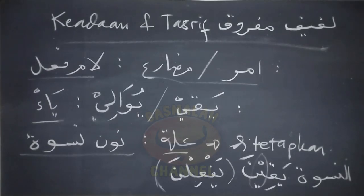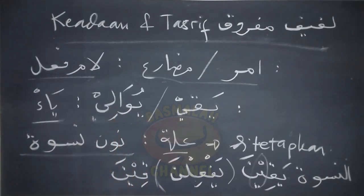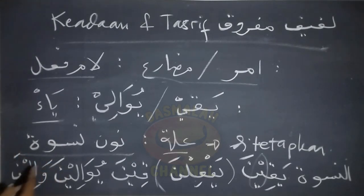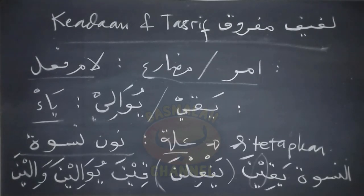Selanjutnya ketika berbentuk fi'il amar maka akan menjadi kiina, atau lafad yuwali maka akan menjadi yuwalina, dan ketika berbentuk fi'il amar maka akan menjadi walina. Jadi yaknya di sini tidak dibuang dan juga tidak dirubah bentuknya menjadi yang lain. Ini adalah ketentuan dan tasrif dari fi'il yang masuk di dalam kategori lafif mafruk, baik ketika berbentuk fi'il madi, fi'il mudhari', maupun fi'il amar. Di mana ketentuan daripada lafif mafruk ini sama dengan ketentuan dari fi'il bina' mithal dan fi'il bina' naqis. Silakan dipelajari dengan seksama dan sampai jumpa pada pembahasan berikutnya.